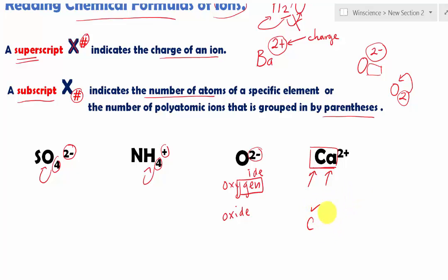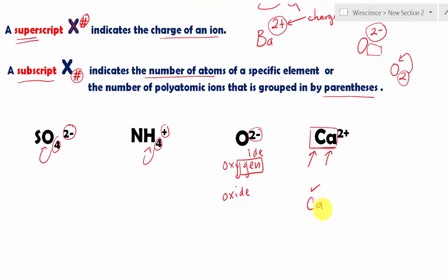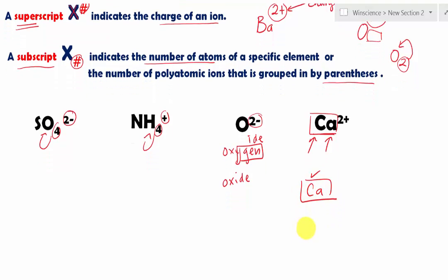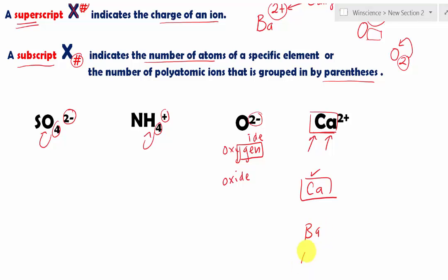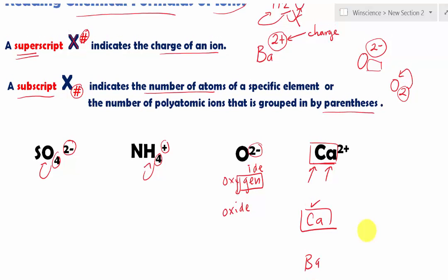If you have C and A and this is one element, this is another element. But in this case, the a is lowercase. That means it is a single element. Just like we have Ba aluminum Al. So you have to realize those are one single element. In this case, calcium has a charge of two plus.